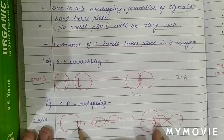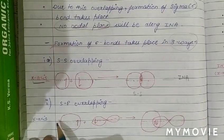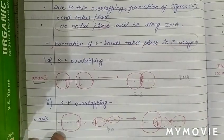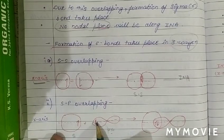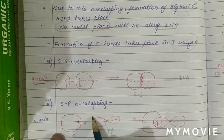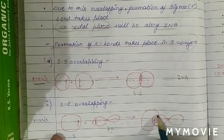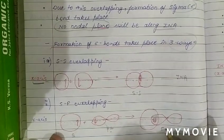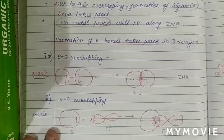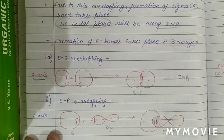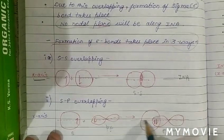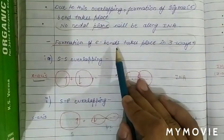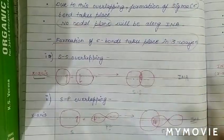In sp overlapping, one s orbital and one px orbital along the x-axis undergo head-on overlapping. The s orbital is spherical and the p orbital is dumbbell-shaped. The region of maximum electron density is at the overlap, and the bond formed is a sigma bond. The bond forms between the s and px orbital along the internuclear axis.